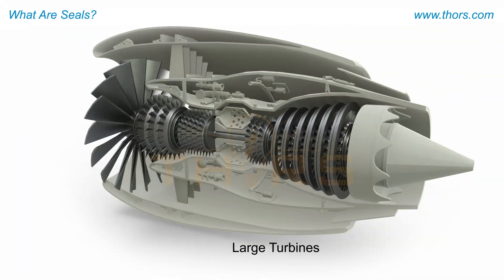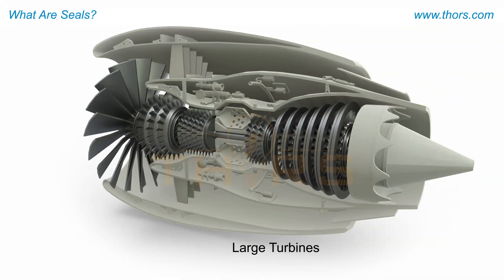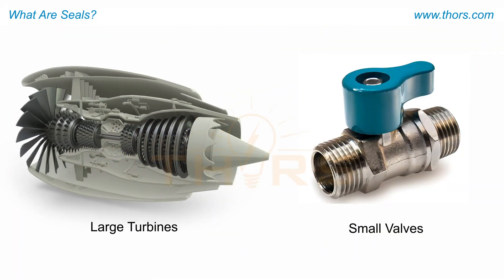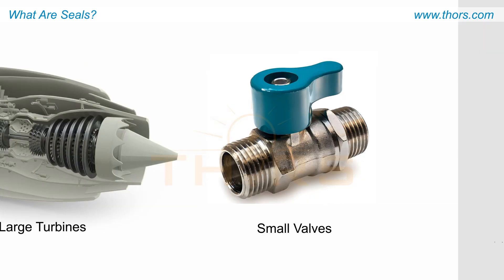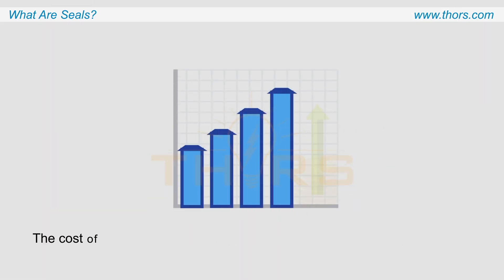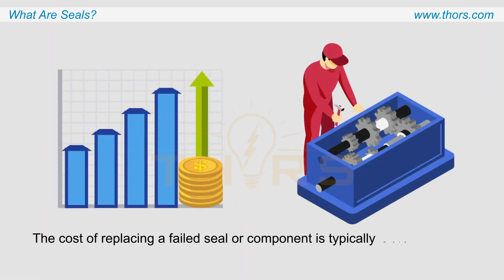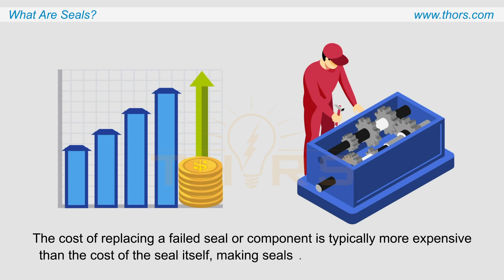Seals are used in machinery of all sizes, from large turbines to small valves. The cost of replacing a failed seal or component is typically more expensive than the cost of the seal itself, making seals a functionally critical product.